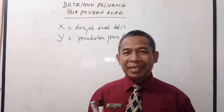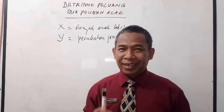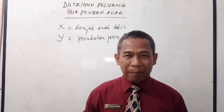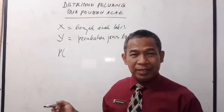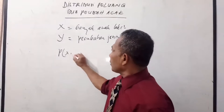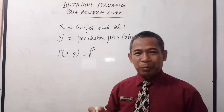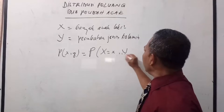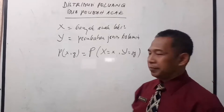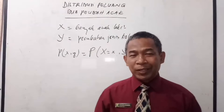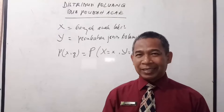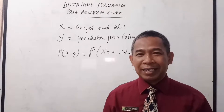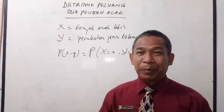Jika X besar dan Y besar adalah dua buah peubah acak diskret, maka fungsi yang diberikan oleh P(X,Y) — yaitu P besar dari X besar sama dengan X kecil dan Y besar sama dengan Y kecil — disebut fungsi peluang gabungan. Kalau tadi dalam tiga anak, X menyatakan banyaknya anak laki-laki dan Y menyatakan banyaknya perubahan jenis kelamin.